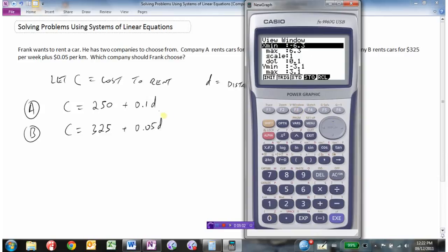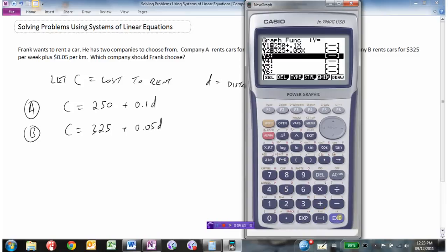We've got to play around with the view window. X is our distance, it doesn't make sense to have negative distance. He'll drive something, presumably more than 6 kilometers. Let's go as high as 300 kilometers, that's reasonable to drive in a week. Scale let's go up by 50. The Y value is the cost, it's not going to be negative. We know the maximum cost is already 325 before it leaves the parking lot, so let's go 500 for a cost, go up by 100 on our scale.